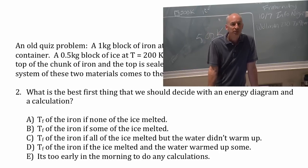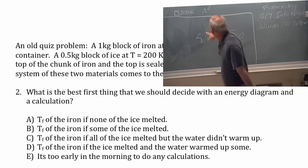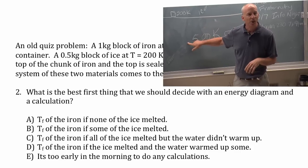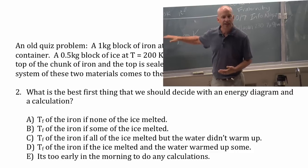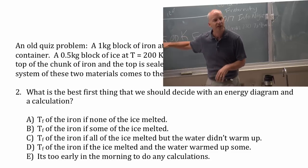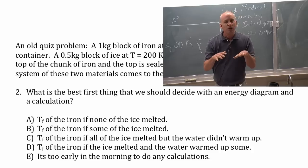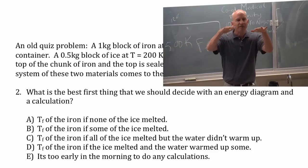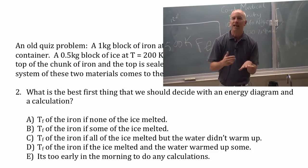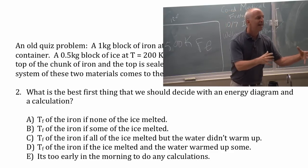One thing that you could do is figure out how much energy you need to take away from the iron to get the iron down to zero degrees C. To get the iron from 500 Kelvin down to 273 Kelvin. If you know how much energy you have to take out of the iron to get it down to 273, you calculate that number.